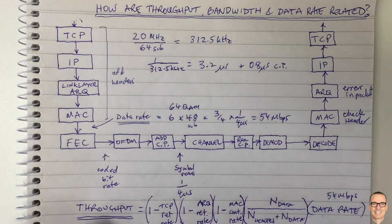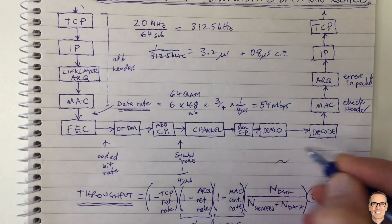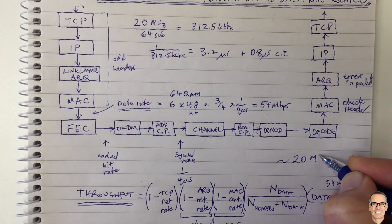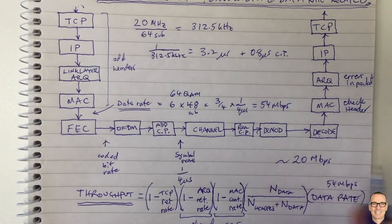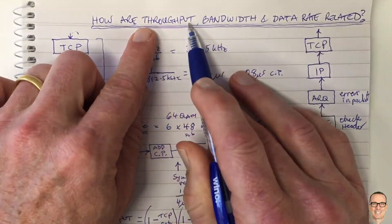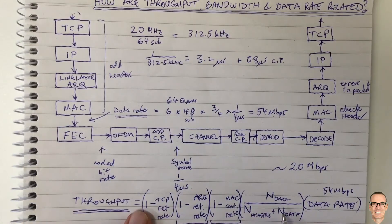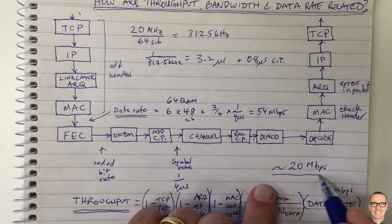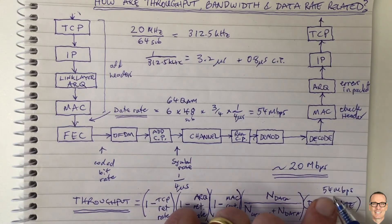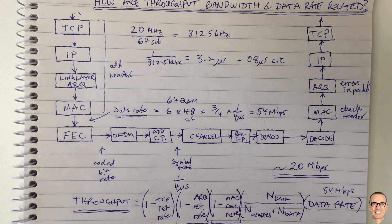This throughput calculation can take the 54 Mbps data rate and bring it down to values in the order of 20 Mbps, or even less. The throughput and the data rate are related by all these factors, which means the overall throughput you end up getting is not going to be the 54 Mbps advertised as the maximum data rate.